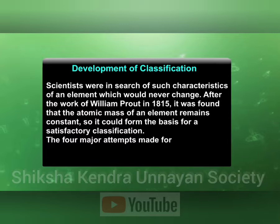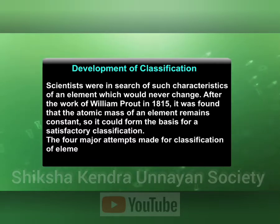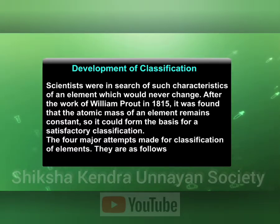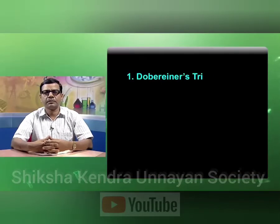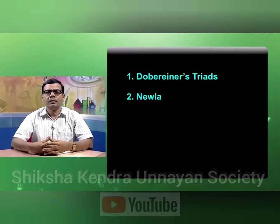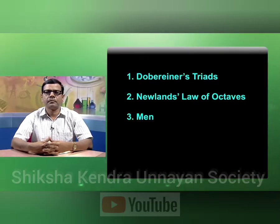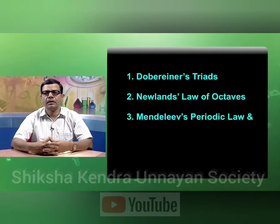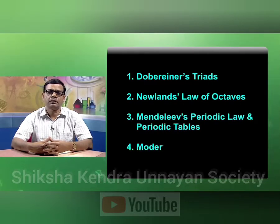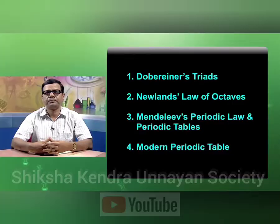The four major attempts made for classification of elements are as follows: Dobereiner's Triads, Newlands' Law of Octaves, Mendeleev's periodic law and periodic table, and the modern periodic table.